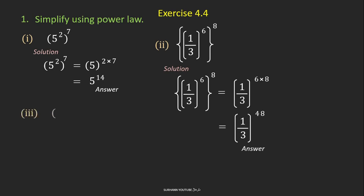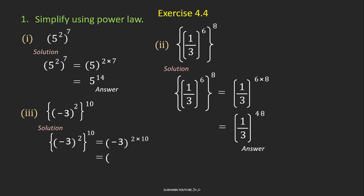Similarly for problem number 3, just multiply the power 2 into 10 to get 20. Here you see there is a negative integer with exponent 20, and since 20 is an even number, the answer will be a positive integer. Now try to solve all other problems by yourself — they are all very easy and simple.